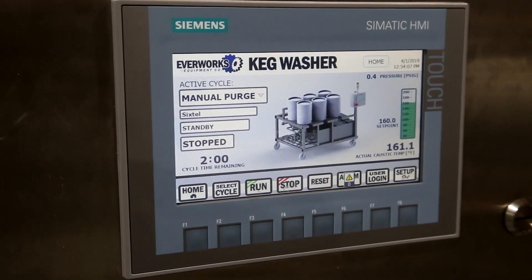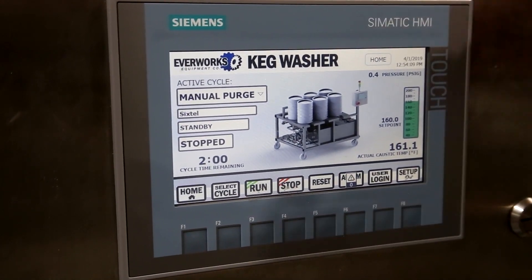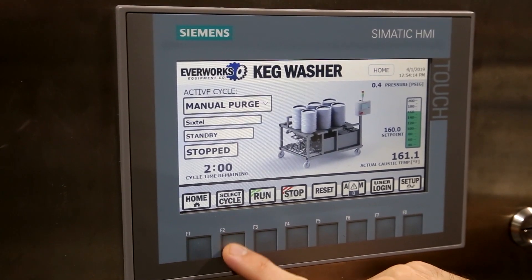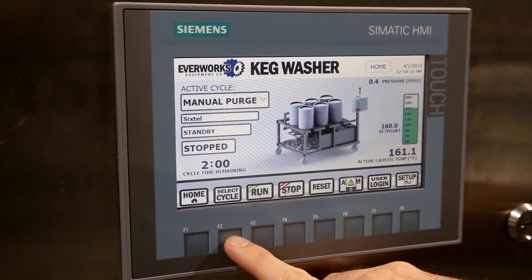Here on our main operator interface screen, it's all touchscreen capable as well as hard keyed. With this F2 button we can select through different cycles of operation.